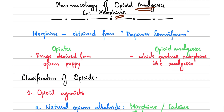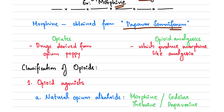What is morphine? Morphine is obtained from Papaver somniferum, which is a plant. We have two terms: opiates and opioid analgesics. Opiates are those drugs which are derived from the opium poppy plant. Opioid analgesics are drugs which produce morphine-like analgesia. Opiates are opioids, but opioids are not necessarily opiates.